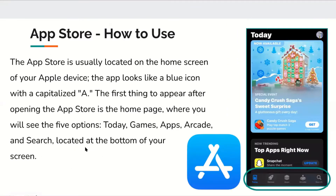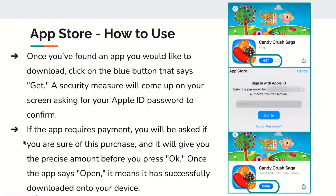The App Store is a pretty basic feature to use. It's usually located on the home screen — it looks like a blue icon with a capitalized A with three sticks coming together. The first thing to appear after opening the App Store is the homepage where you will see the five categories at the bottom of the screen. Once you find an app you'd like to download, there will be a blue button that says 'Get.' A security measure will come up asking for your Apple ID password to confirm. If the app requires payment, you'll be asked to confirm the purchase and it will show the precise amount before you press OK. Once the app says 'Open,' it has successfully downloaded onto your device.